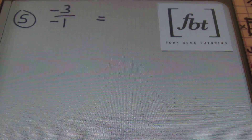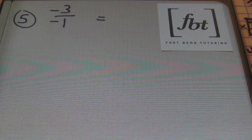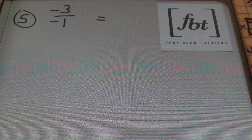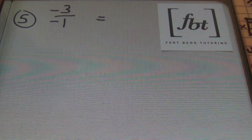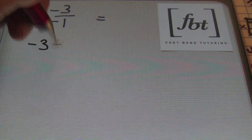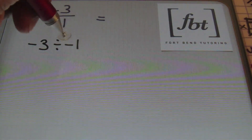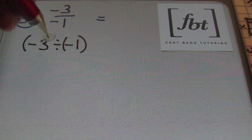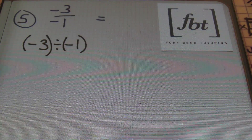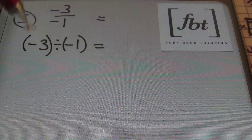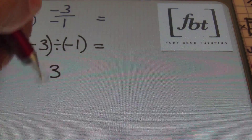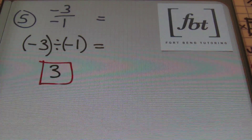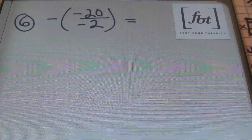Moving on to problem number five: I have negative three divided by negative one. I know my answer is going to be positive because I'm dividing like signs — a negative divided by a negative is a positive result. You can rewrite this as negative three divided by negative one, and you can even dress it up in parentheses if you like. Three divided by one is three, so that's the answer.